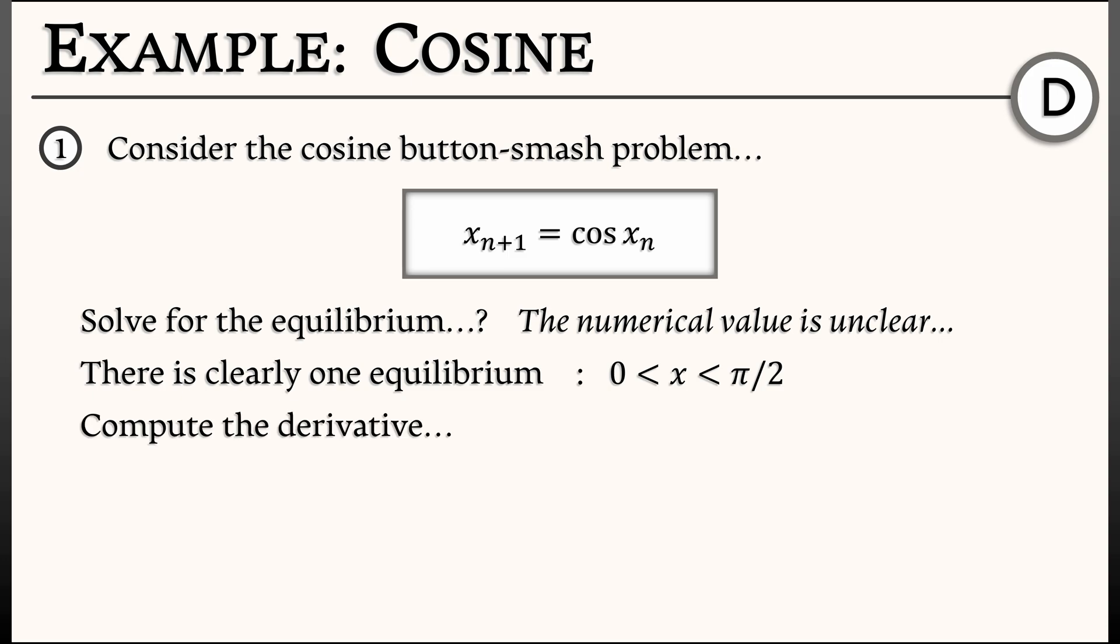I'm going to compute the derivative of the right-hand side. That derivative, the derivative of cos(x) with respect to x, is -sin(x). And I have to evaluate this at this equilibrium that's somewhere between 0 and π/2. I know that this is going to be a number somewhere between -1 and 0. And in particular, it is strictly less than 1 in absolute value. That means this is a stable equilibrium.